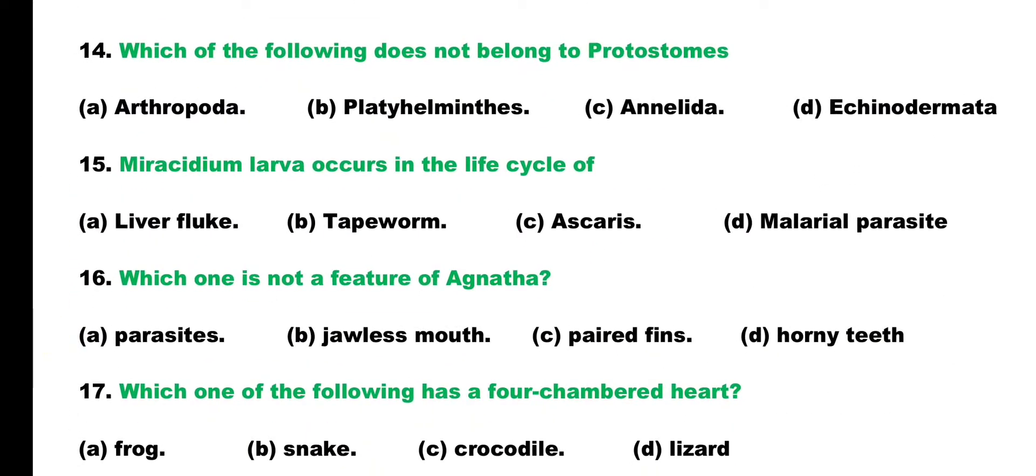Question number 14. Which of the following does not belong to protostomes? Arthropoda, Platyhelminthes, Annelida, or Echinodermata? Correct answer is Option D. Protostomes include three phyla: Annelida, Platyhelminthes, and Arthropoda. In protostomes, the blastopore forms the mouth, whereas Echinodermata belongs to deuterostomes. Echinodermata does not belong to protostomes.